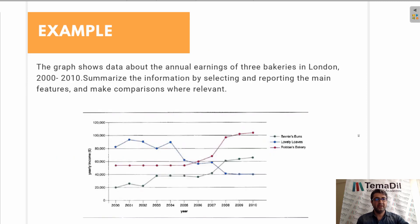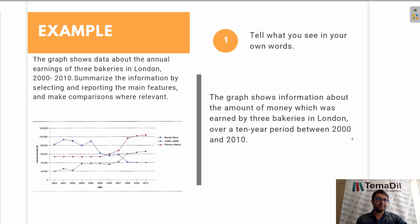As you can see in the example, there are three bakeries in London and their annual earnings — how much money they make in a year — is presented. When we look at this line graph, first we have to tell what we see in our own words. The first section is usually one or two sentences. For example: 'The graph shows information about the amount of money which was earned by three bakeries in London over a 10-year period.' You could also use the instructions provided.